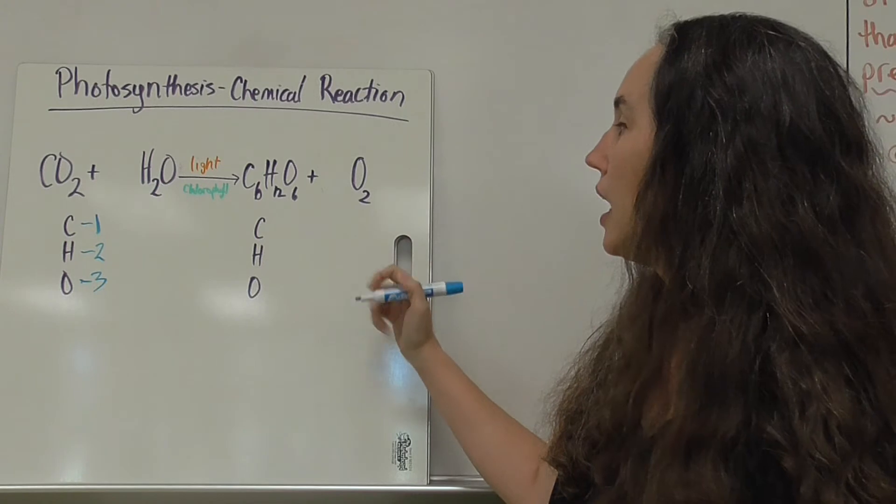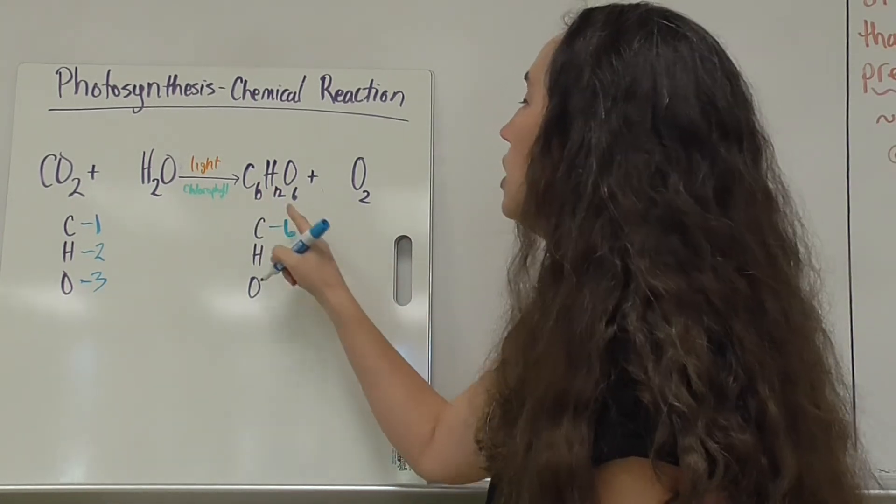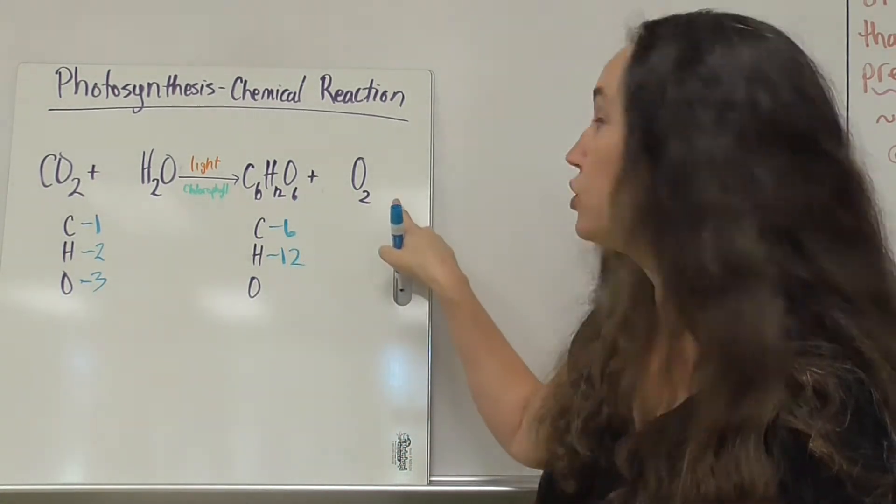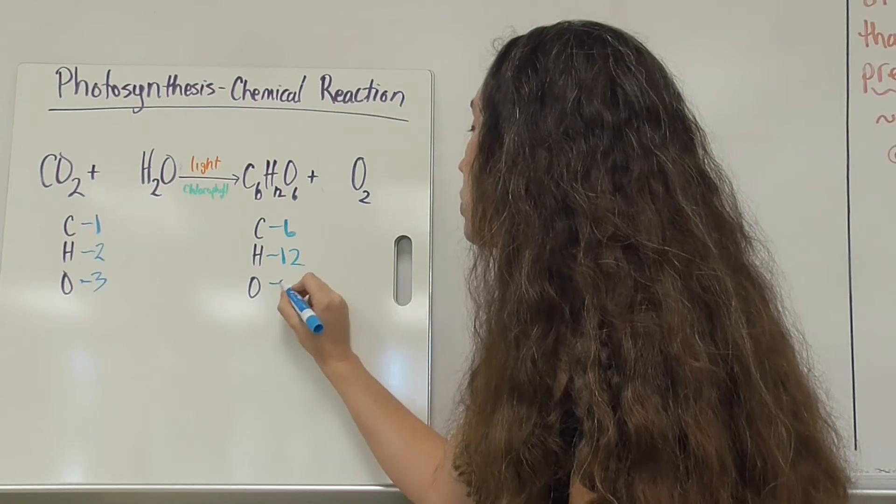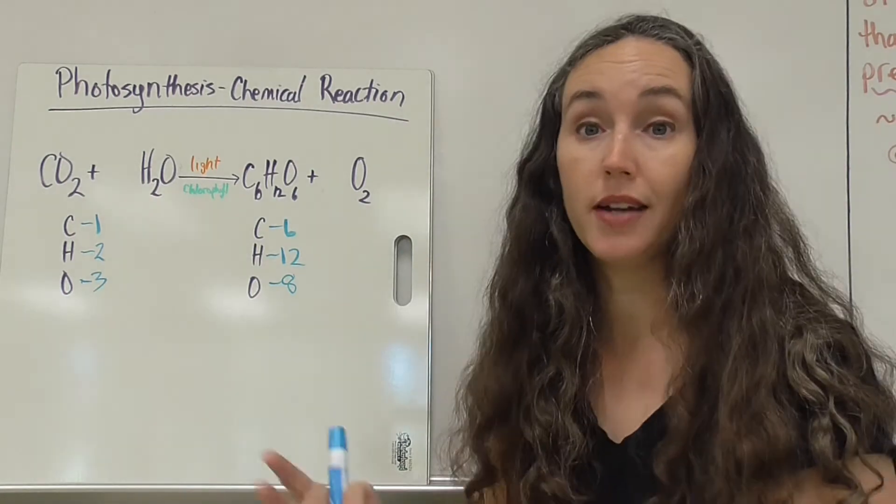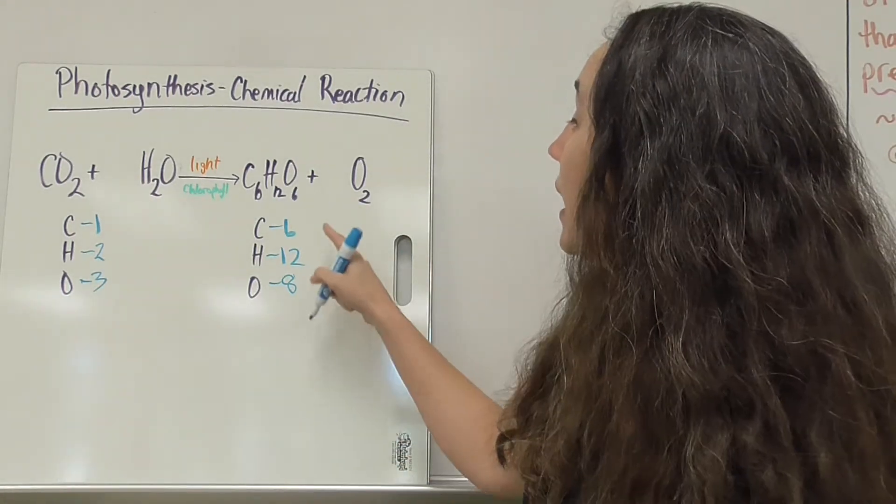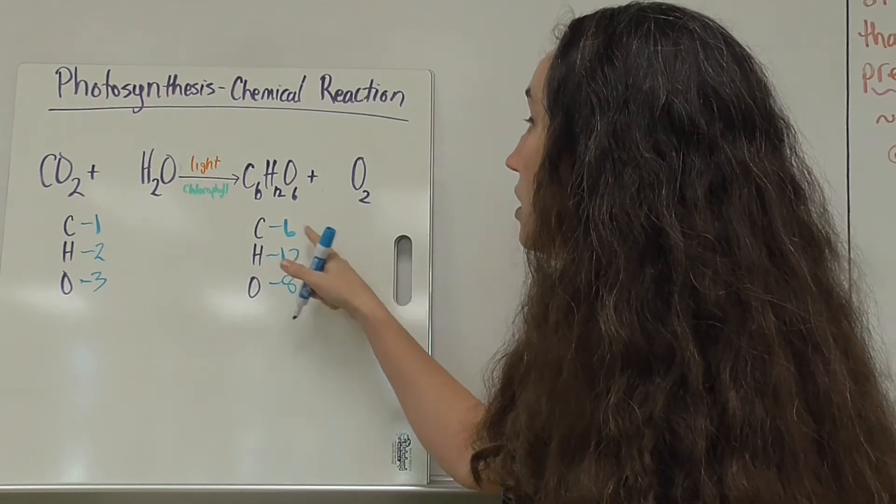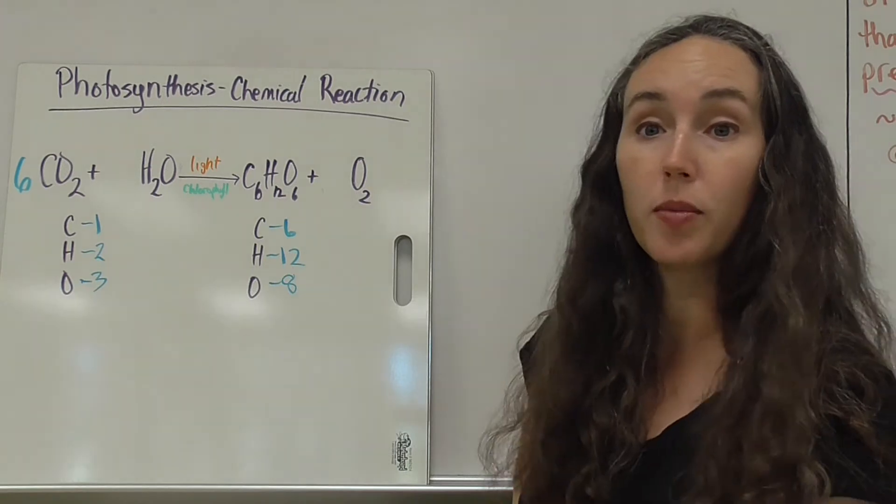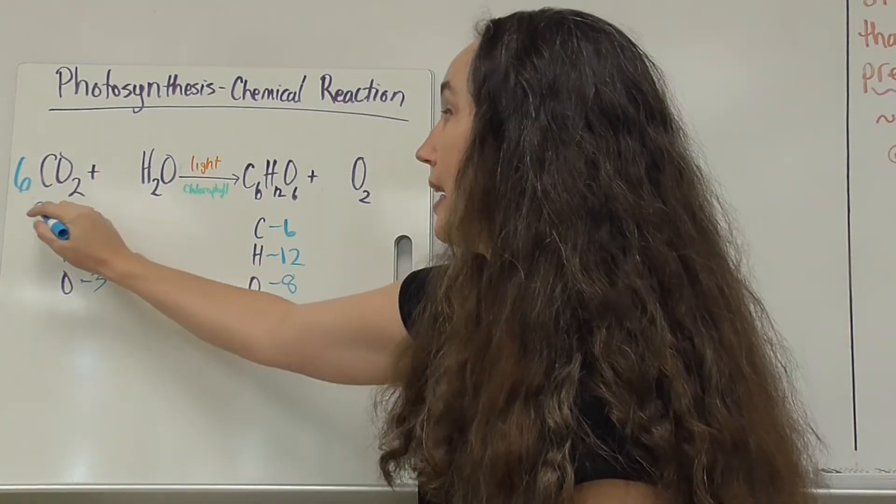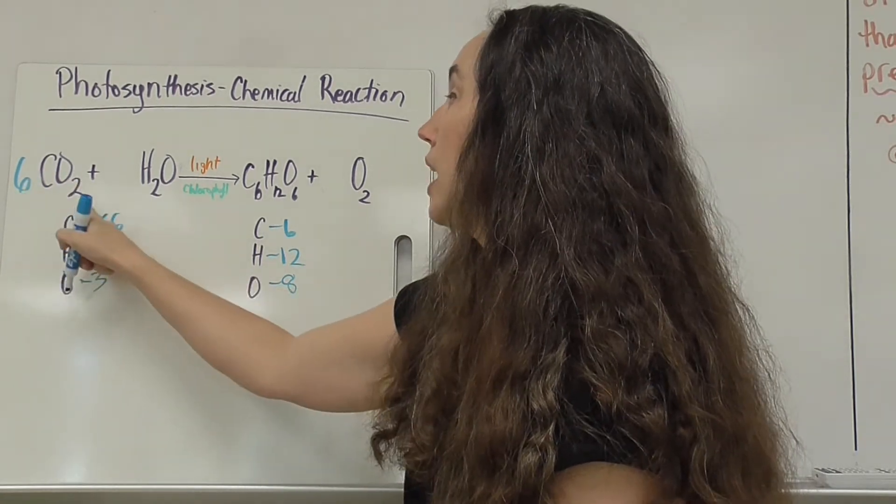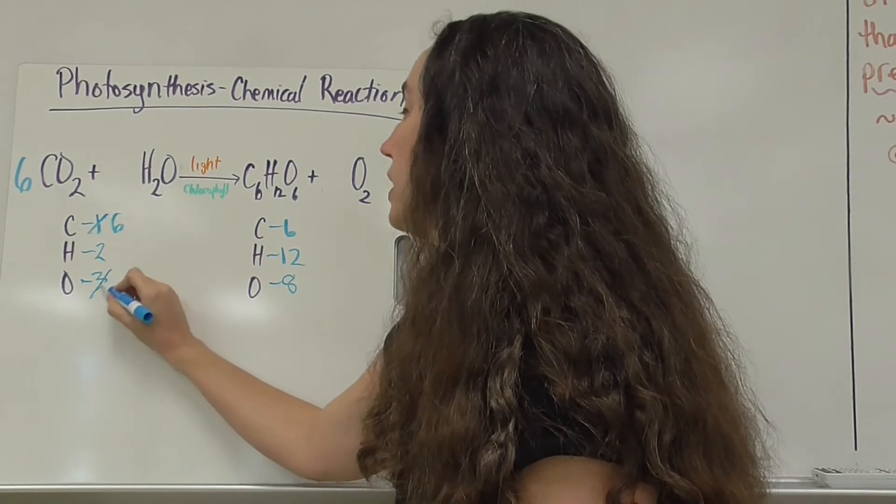On the product side, we have six carbons, 12 hydrogens, and oxygens, we have six in glucose, and then two more over here in oxygen for a total of eight. All right, now we can think about what's going to be the easiest way to balance it out. So I have six carbons over here, and one over there, so I could put a six as a coefficient in front of carbon dioxide. If we recount, this gives us six carbons, and now 13 oxygen.